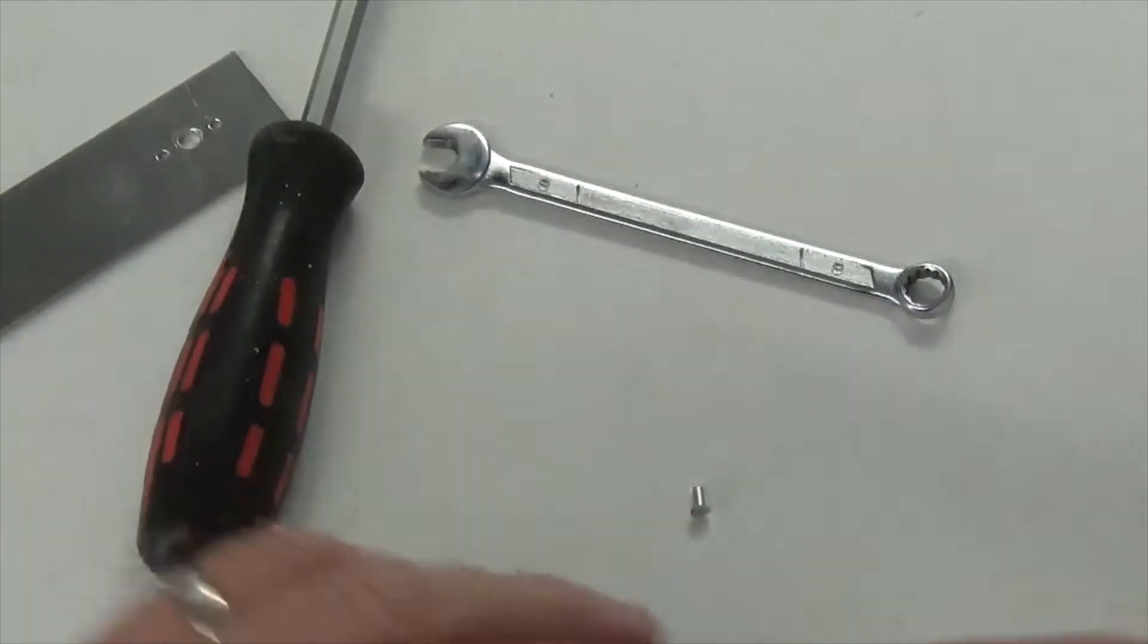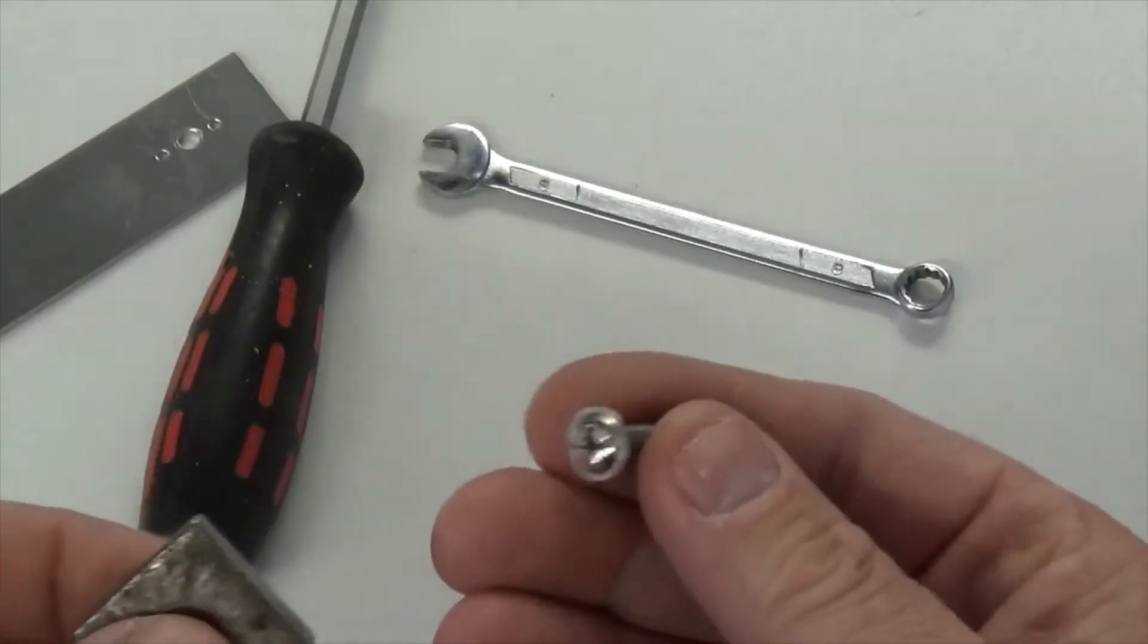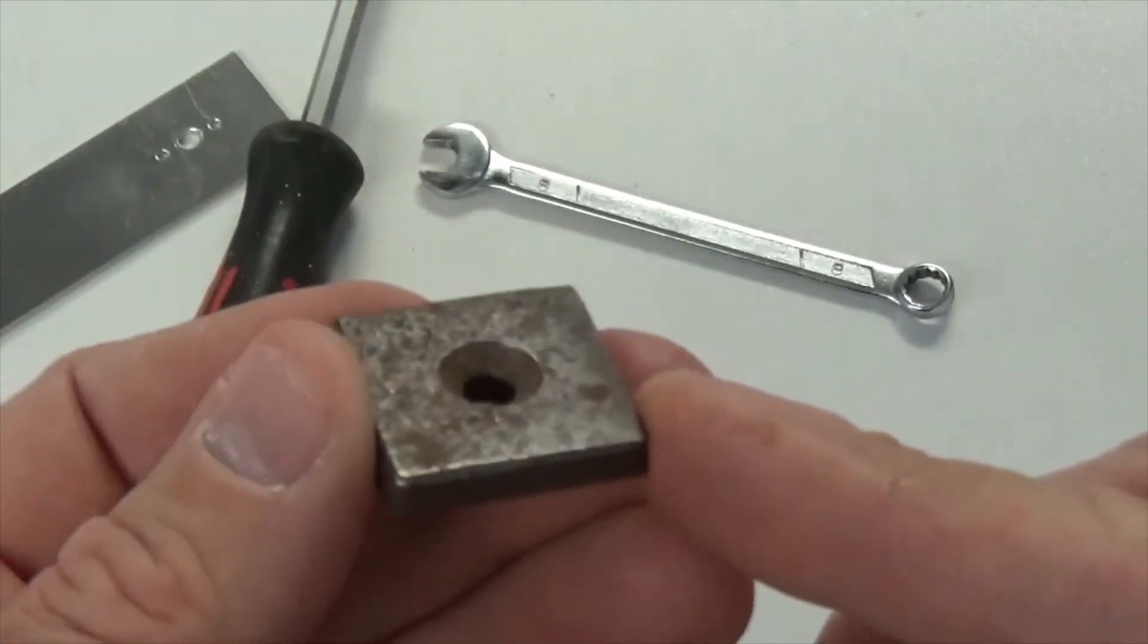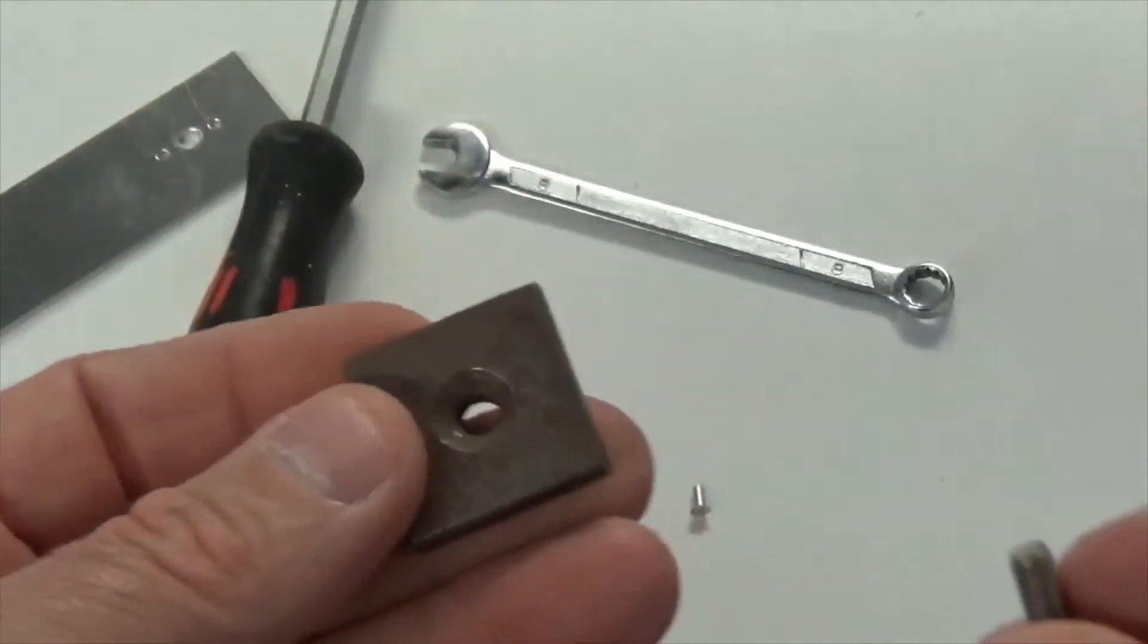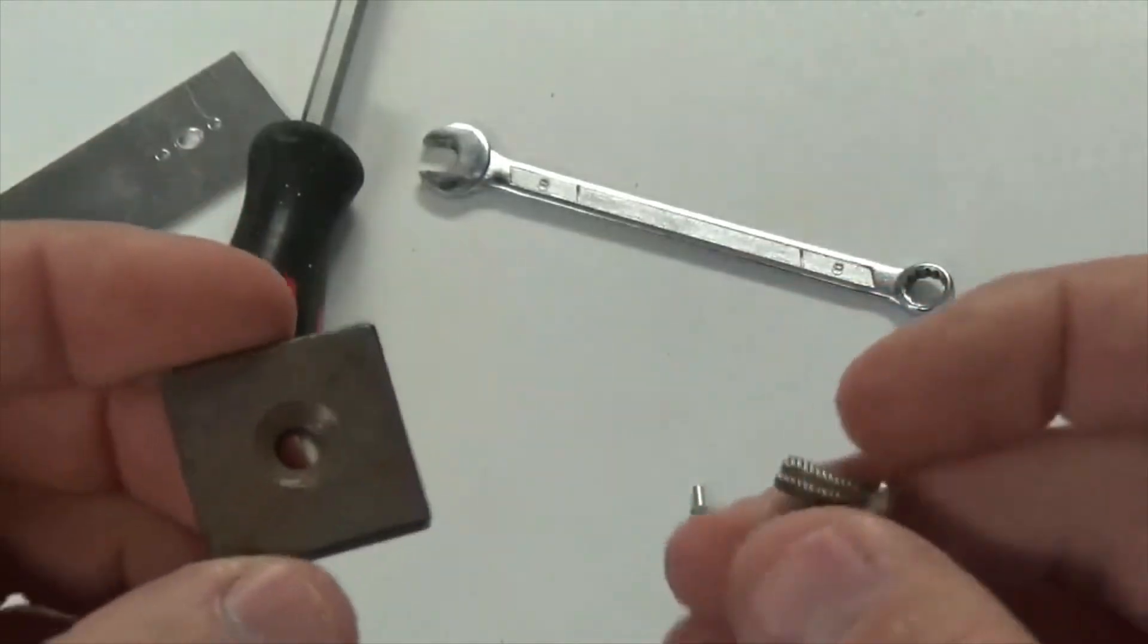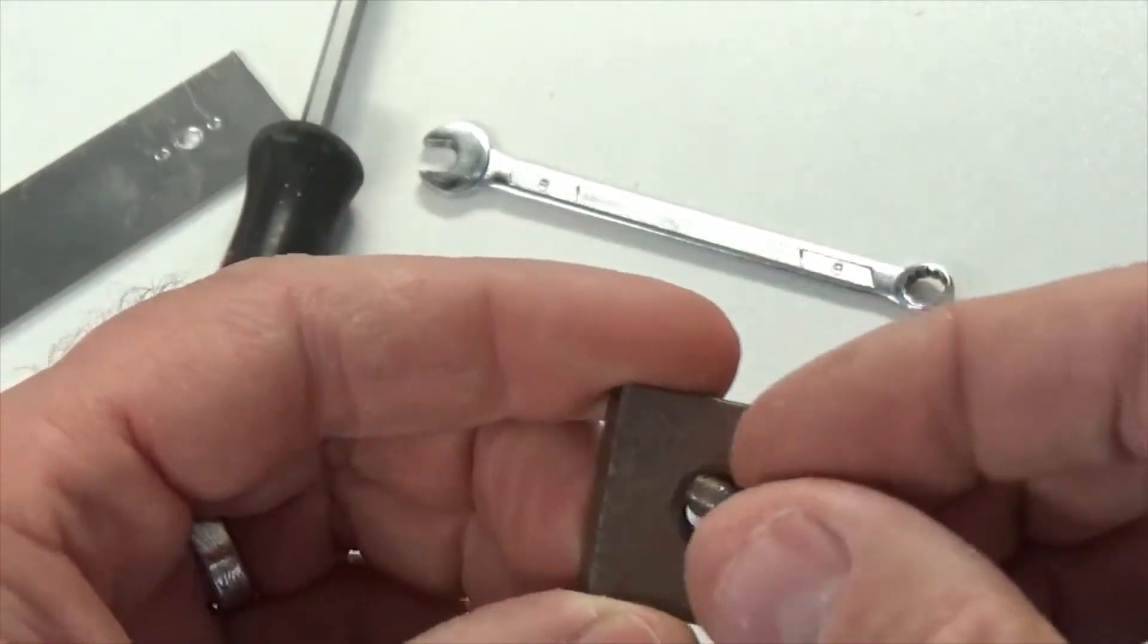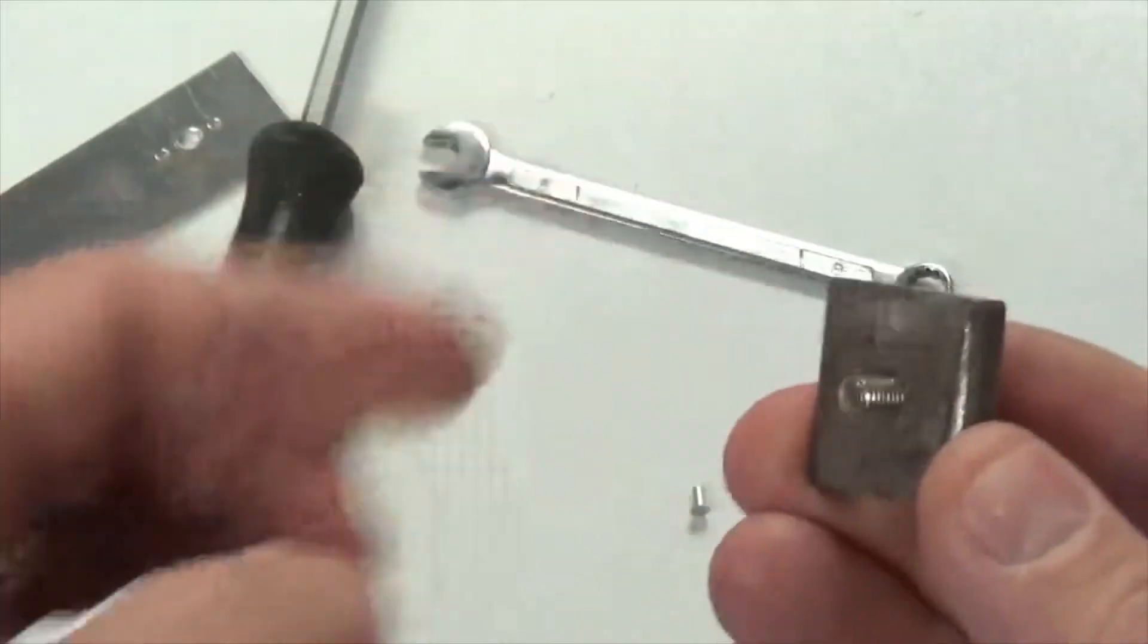And then all you do is you put a bolt through. Now you can either use a... this has actually been countersunk, so if you want to sit this down flat you can countersink it. I haven't got any countersink bolts or screws here, so I'm just using what I had. Like I said, I'm not in an aviation environment here. So you put your bolt through,